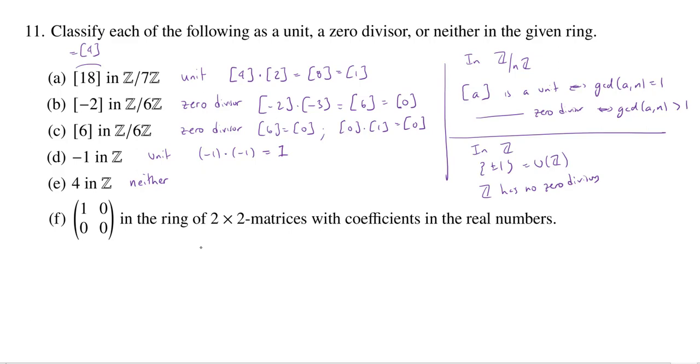Okay. And then finally, we have this example from the ring of 2 by 2 matrices with coefficients in the real numbers. You have this matrix (1, 0, 0, 0). And we want to know whether it's a unit or a zero divisor, or maybe it's neither. Well, if you know a little bit of linear algebra, you'll say it can't be a unit because the determinant of (1, 0, 0, 0) is equal to 0. And so that's going to tell you that (1, 0, 0, 0) is not invertible. So it does not have an inverse. So it's not a unit.